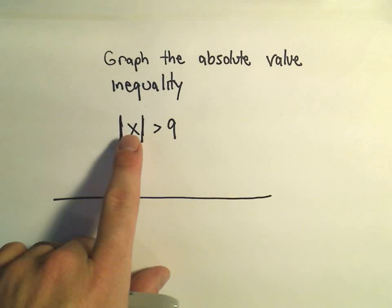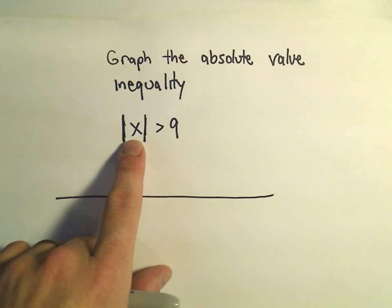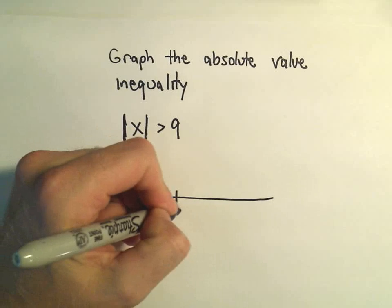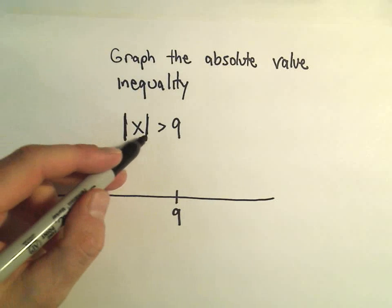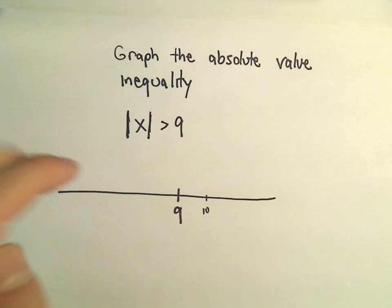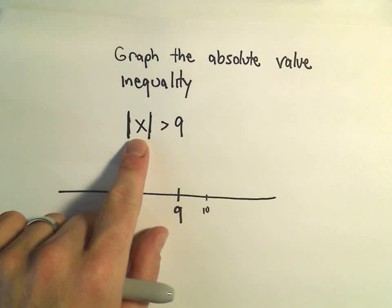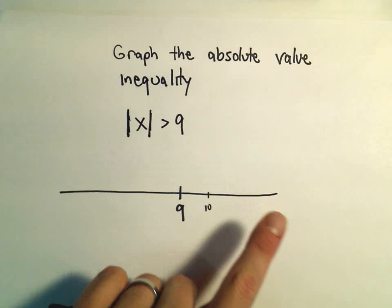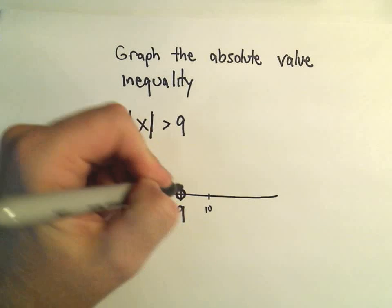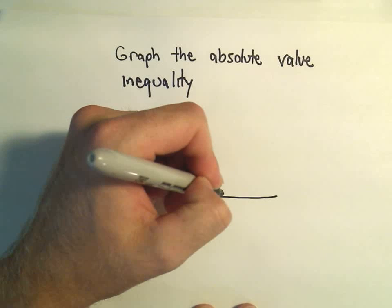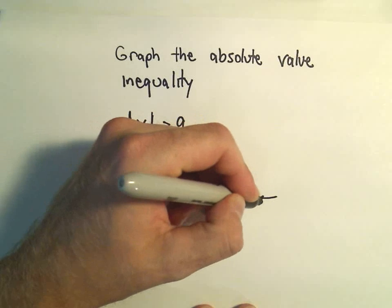Certainly 0 wouldn't work. 1, 2, 3, 4, 5, 6, 7, 8 wouldn't work — the absolute value of 8 is 8, which is not greater than 9. 9 would also not work because 9 is not greater than 9. But notice if we plug in 10, the absolute value of 10 is 10 — that's bigger than 9. Likewise 11, 12, etc. would work. So anything to the right of 9 would work — that's at least part of the solution.